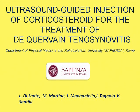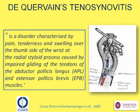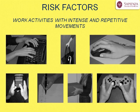Ultrasound Guided Injection of Corticosteroid for the Treatment of De Quervain's Stenosynovitis. De Quervain's Stenosynovitis is a disorder characterized by pain, tenderness, and swelling caused by impaired gliding of the tendons of the abductor pollicis longus and extensor pollicis brevis muscles. High-risk activities that may aggravate De Quervain's disease include work activities with intense and repetitive movements, such as using a mouse and keyboard for a long time, handwriting, and lifting weights.